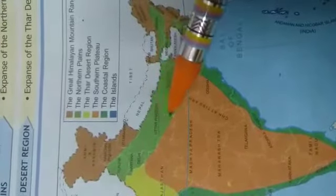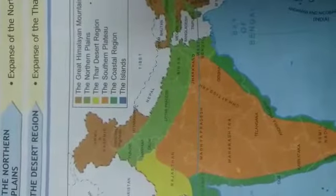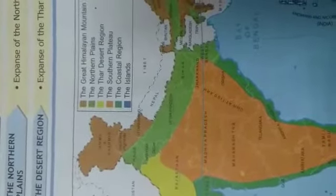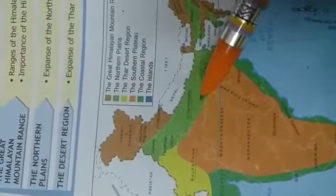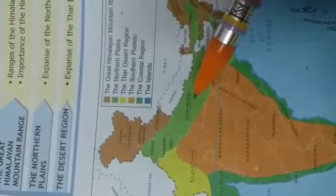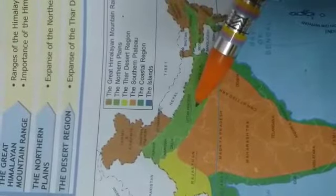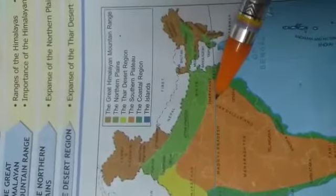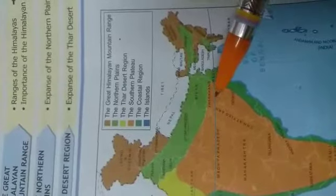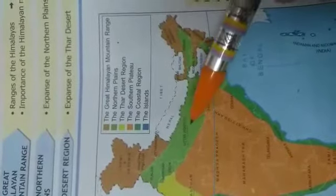Next comes the northern plains, also called the Gangetic Plains. The Great Indian Northern Plains are one of the largest plains of fertile land in the world. These are watered by several rivers like Ganges, Yamuna, Ghagra, Chenab, Ravi, Sutlej, Beas, etc. These plains have been formed over a period of millions of years by the sediments brought by these rivers.